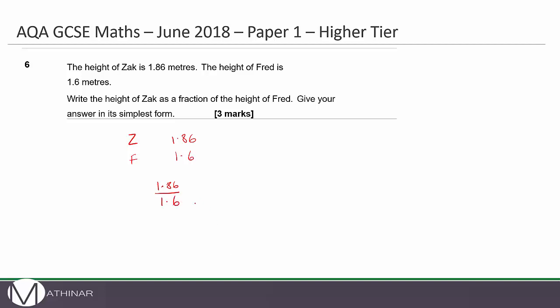Okay, because as a fraction of Fred, he's actually bigger, so this is an improper fraction. And it says give your answer in its simplest form, so what I'm going to do here is get rid of the decimal. I've got two decimal places to get rid of, so I'm going to times the top and bottom by 100 to get rid of the decimal. So this will give me 186 over 160. We simplify this, so this becomes 93.